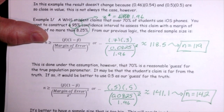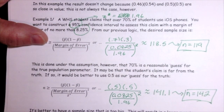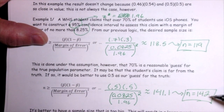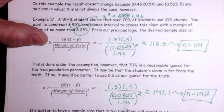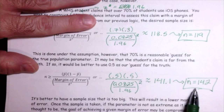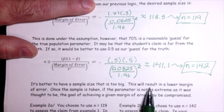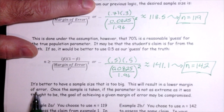A decision must be made before you collect your data: do you want a sample size of 119 or 142? A sample size of 142 is more work, but if guaranteeing the margin of error is important to you, go with the larger sample size. Having a sample size that's too big might result in a lower margin of error — which is a good thing, since you're tending to be closer to the truth.